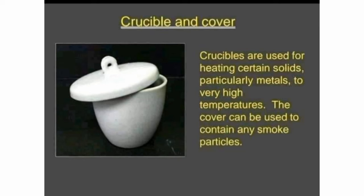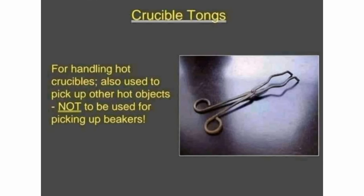Next are crucibles and covers. Crucibles are used for heating certain solids, particularly to very high temperatures. The cover can be used to contain any smoke particles. Crucible tongs are used for handling hot crucibles and also for picking up other hot objects. Note that crucible tongs cannot be used for holding beakers — beaker tongs are used for that purpose.